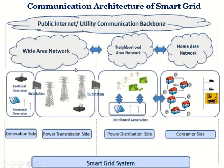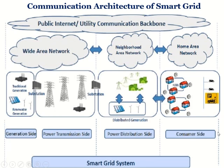In a simplified manner: the Home Area Network is the consumer side, the Neighborhood Area Network is the distribution side, and the Wide Area Network covers the power transmission and generation side. The communication architecture of the smart grid is essentially named based on the area or range it covers — Wide Area for transmission, Neighborhood Area Network for distribution, and Home Area Network for the consumer side.